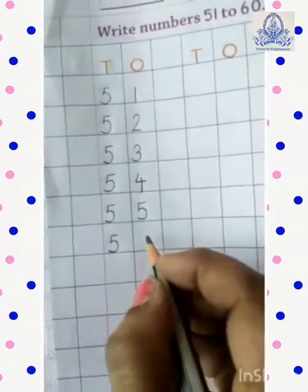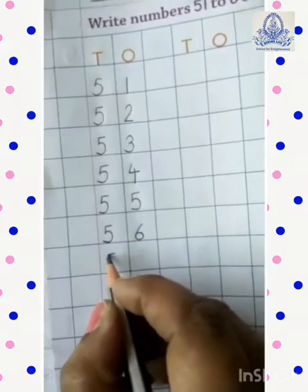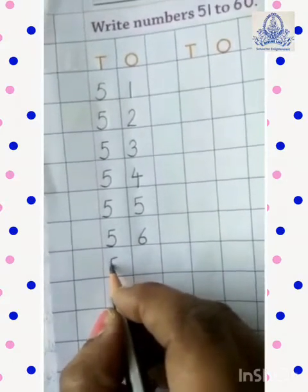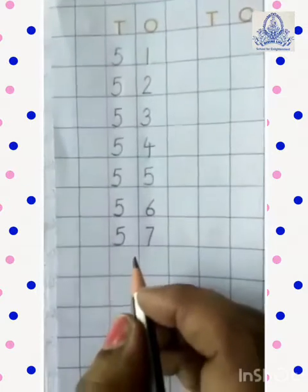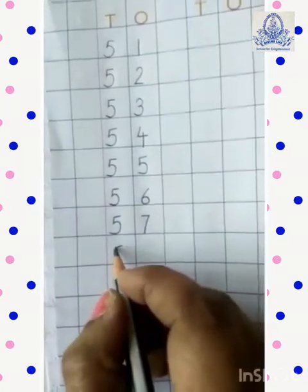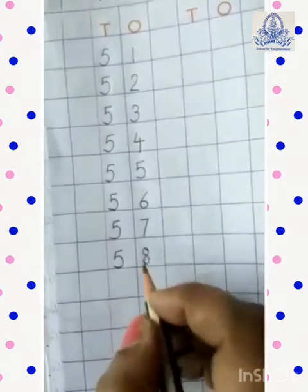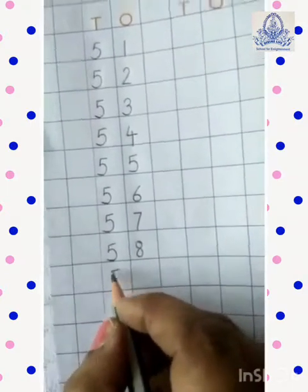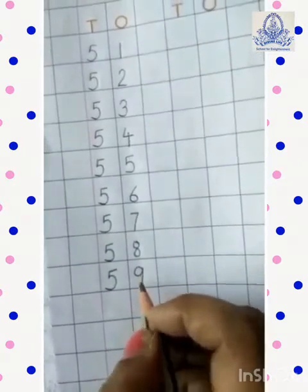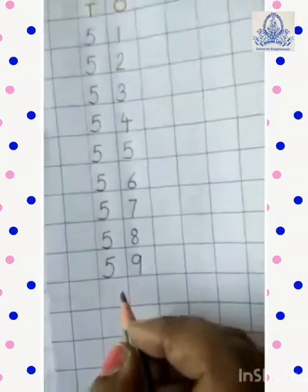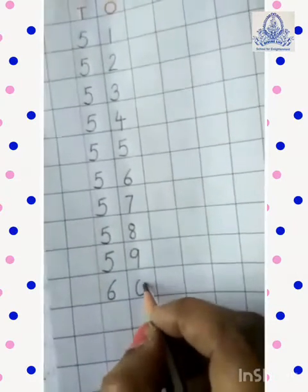5, 6, 56. Then, 5, 7, 57. Next one, 5, 8, 58. Then, 5, 9, 59. And lastly, 6, 0, 60.